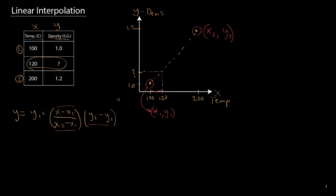So if we were to apply this formula to the data, we would find that y, which is equal to the density at 120 degrees Celsius, would be equal to 1.04. In this case, here would be our value of x and y that we are solving for in the system.